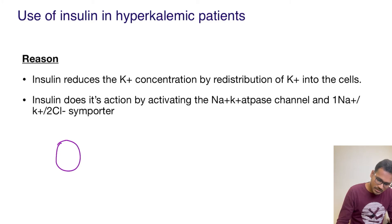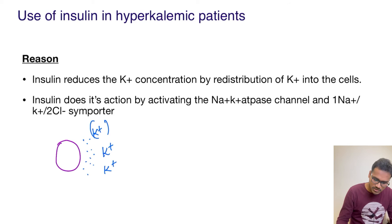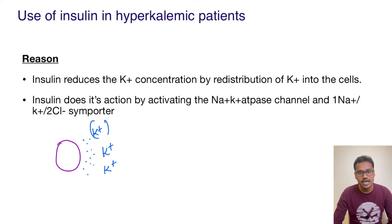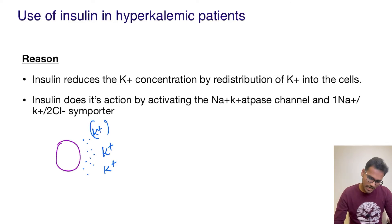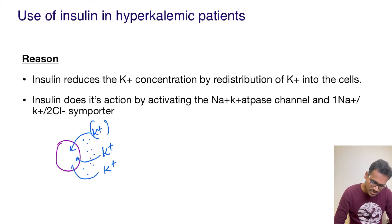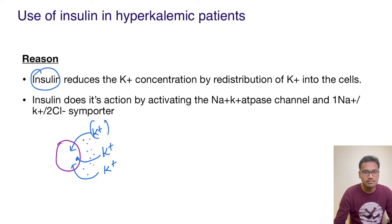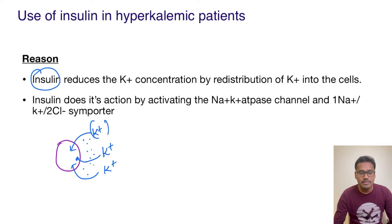What is hyperkalemia? Hyperkalemia means that the extracellular (ECF) potassium levels are increased. Whenever ECF potassium levels are increased, they have the highest tendency to produce arrhythmias. So for immediate treatment, we try to send the potassium back into the cells — and insulin is what helps to put the potassium ions back into the cells.